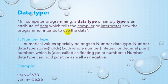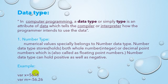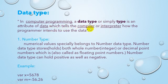In computer programming language, a data type is an attribute of data which tells the compiler or interpreter how the programmer intends to use the data. In a previous lecture I told you what is a compiler and interpreter - the interpreter is a middleman which converts programming language into machine language. Your compiler checks which data type you are using.